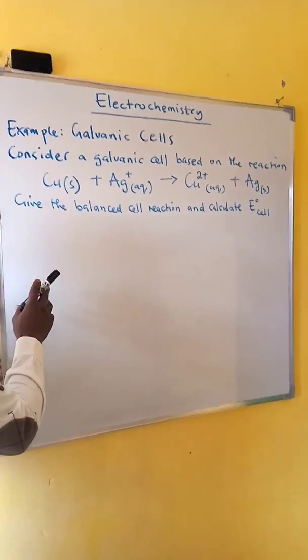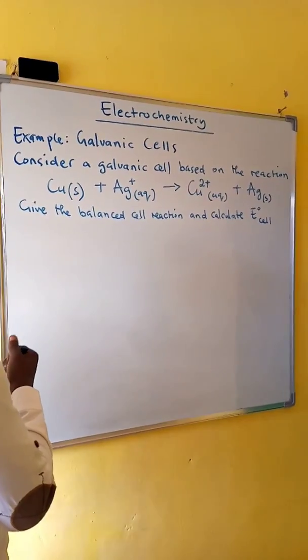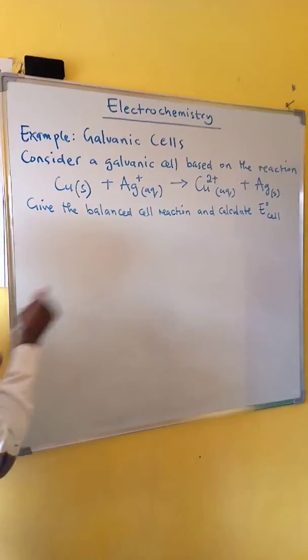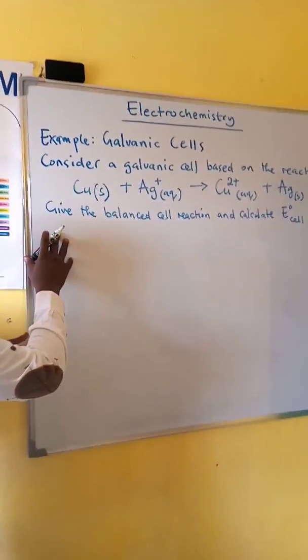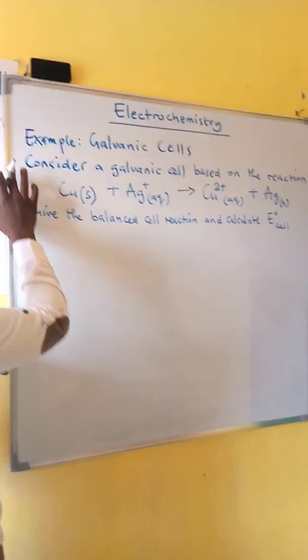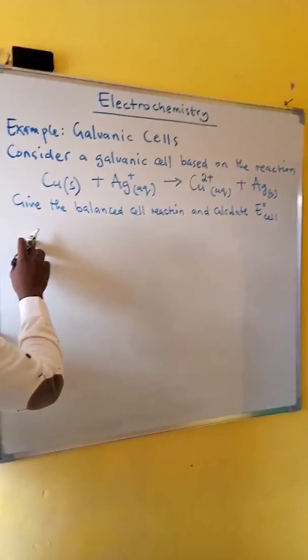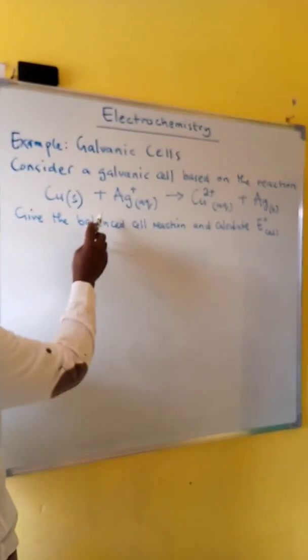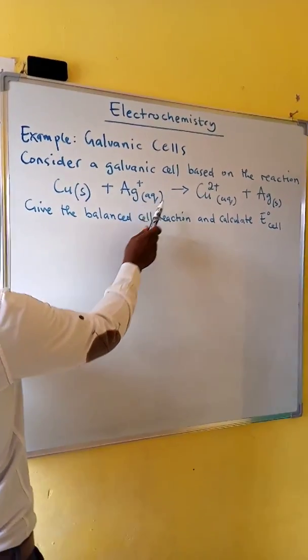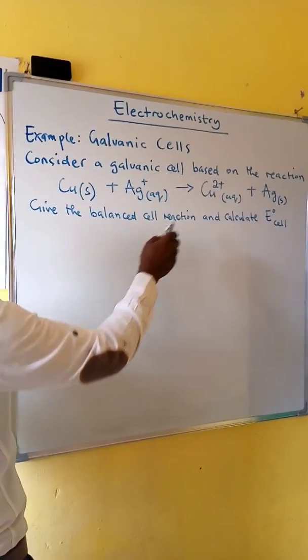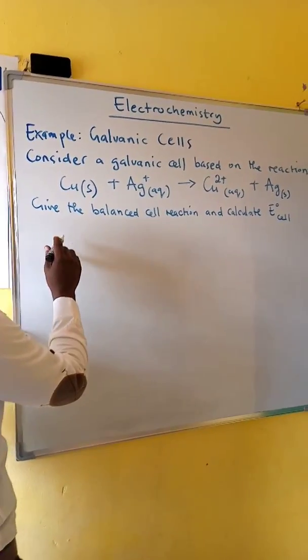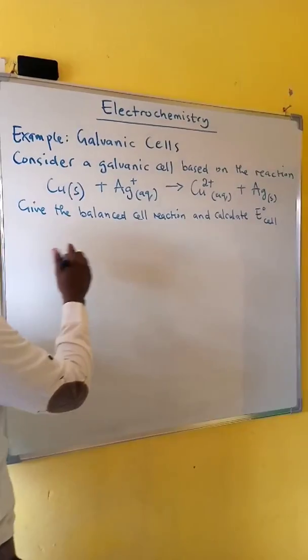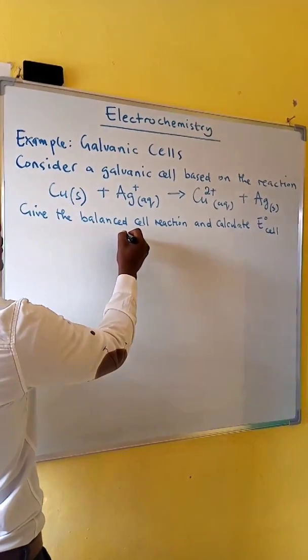A galvanic cell is a device in which chemical energy is converted into electrical energy. Example: consider a galvanic cell based on the reaction copper plus silver ion forms copper 2 plus silver. Give the galvanic cell reaction and calculate standard cell potential.